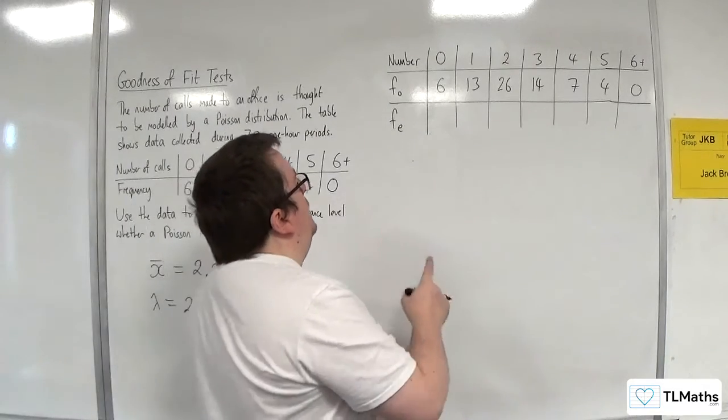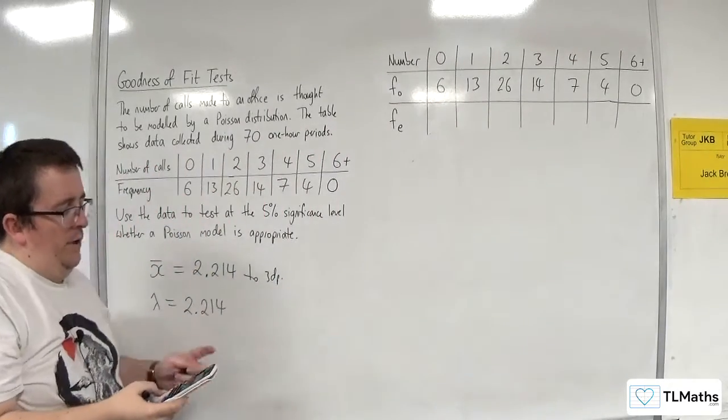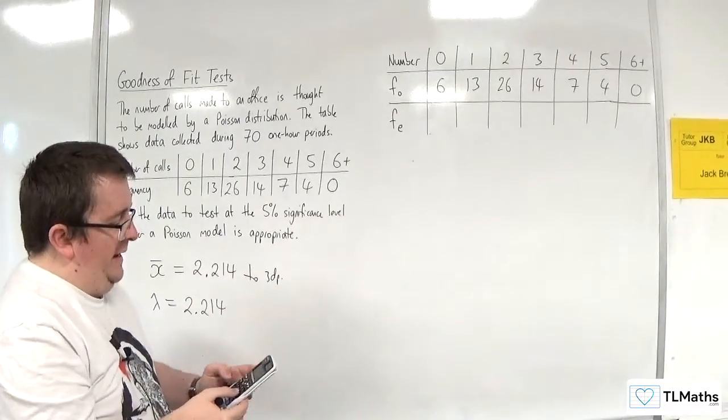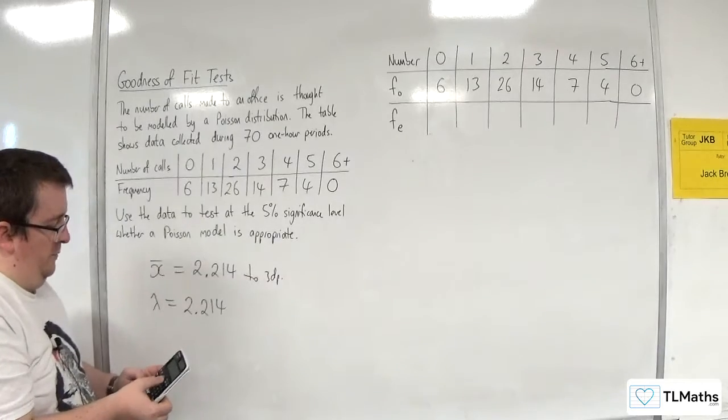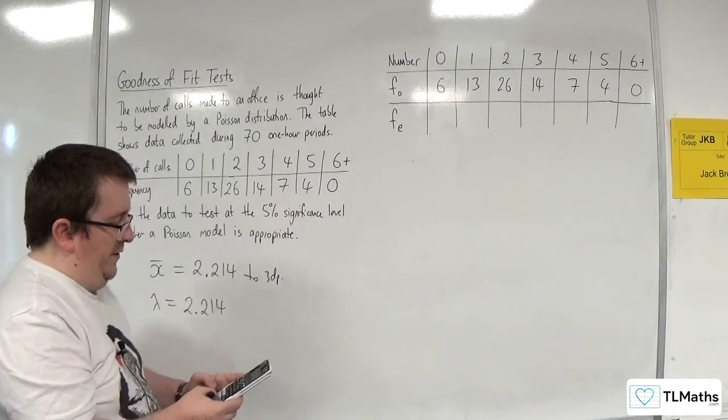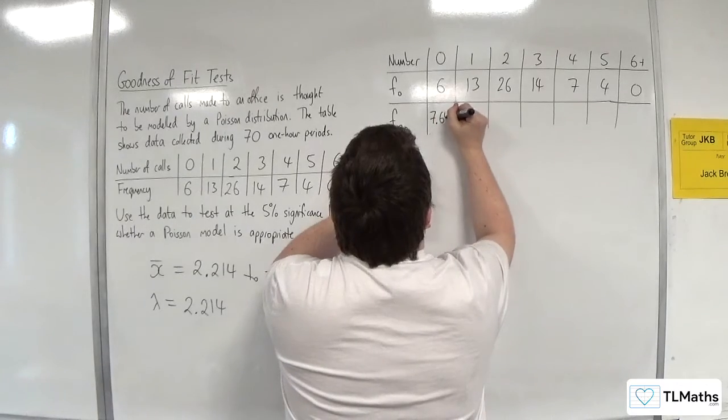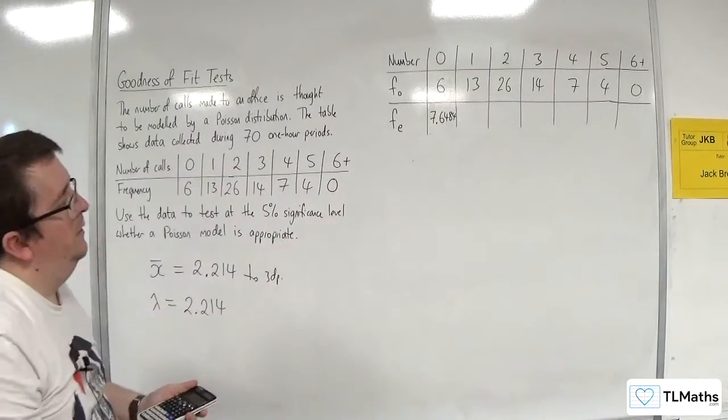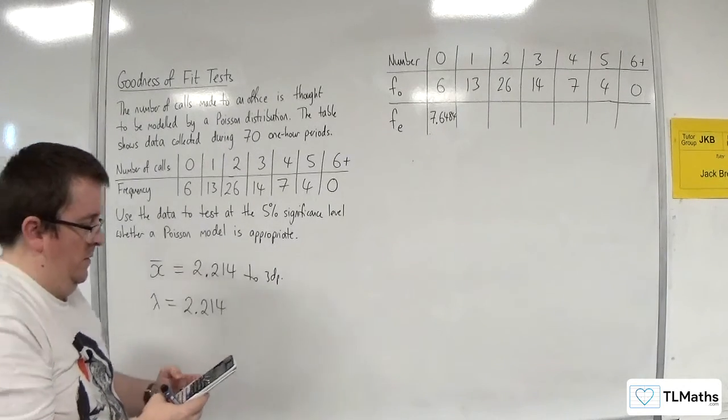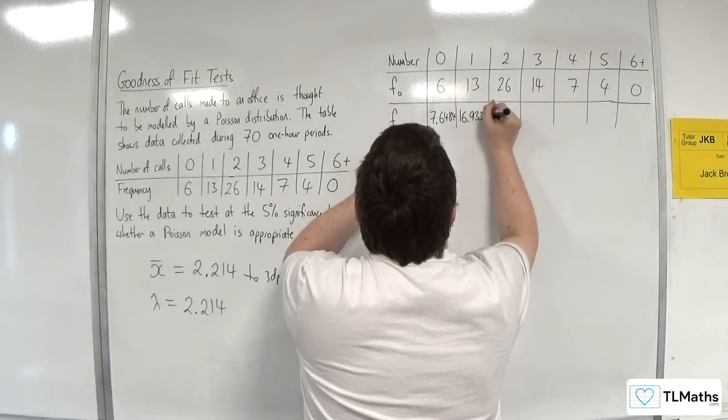Right, now I need to find the probabilities of X equals 0, 1, 2, 3, 4, 5 and then multiply them by 70. Probably the easiest way for me to do it on my calculator is to use the formula. So, e to the power of minus 2.214 times 2.214 to the power of 0 over 0 factorial, and I want to times that by 70. I get 7.6484 to 4 decimal places.